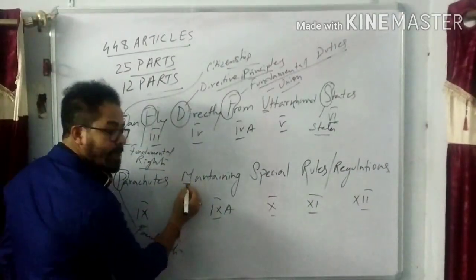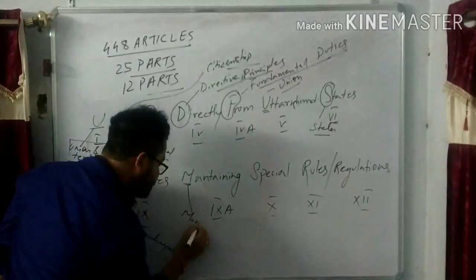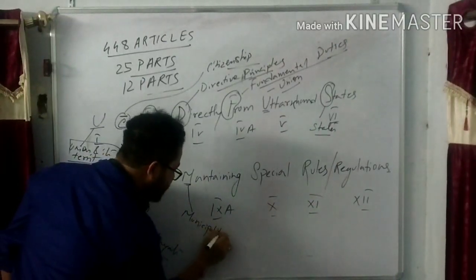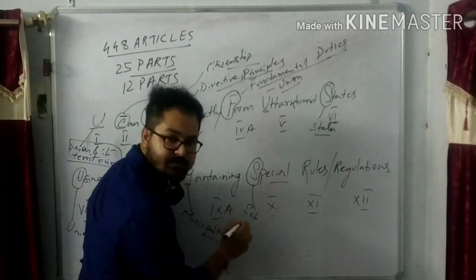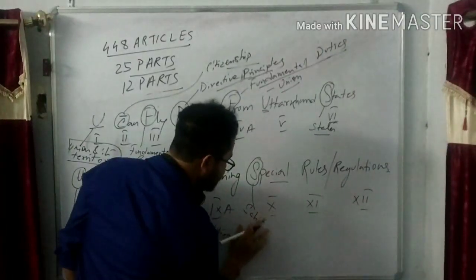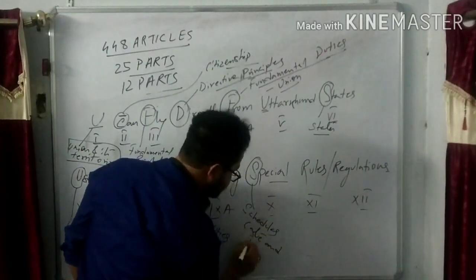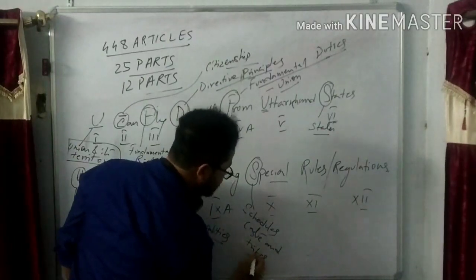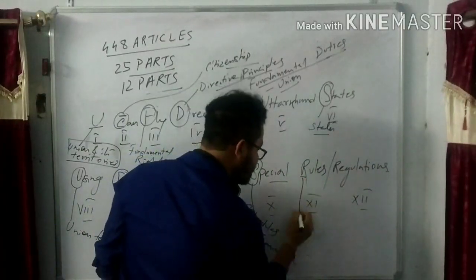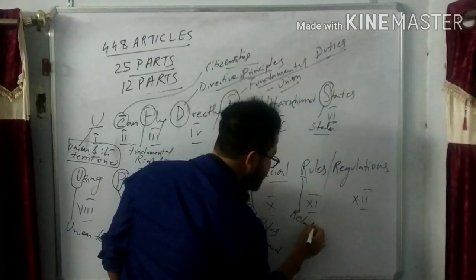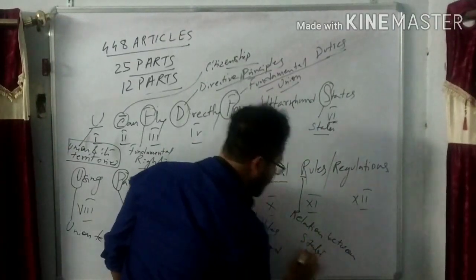M from maintaining stands for Municipalities in Part 9A. S from special stands for Scheduled Castes and Tribes in Part 10. All articles related to scheduled castes and tribes will come here. And R from rules stands for Relations between States in Part 11 and 12.